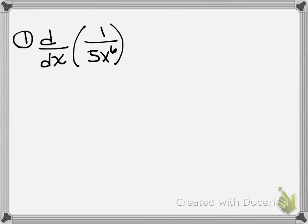So we don't know how to take the derivative of 1 over 5x to the 6th without rewriting this. So let's rewrite it as 1/5 times x to the negative 6. Now what we have is a constant, that's 1/5, times a function we know how to take the derivative of.